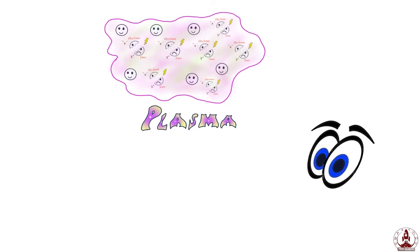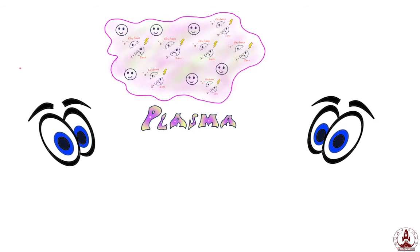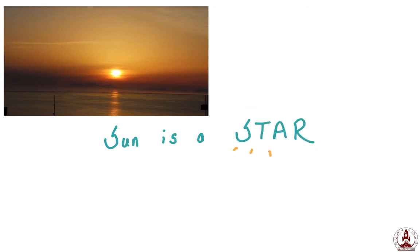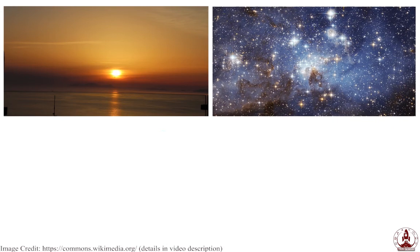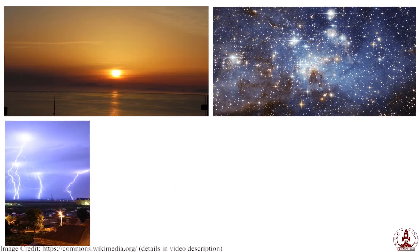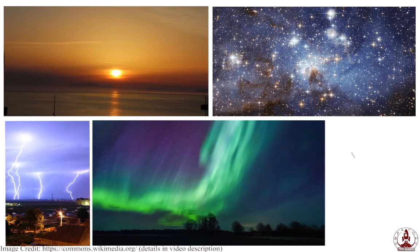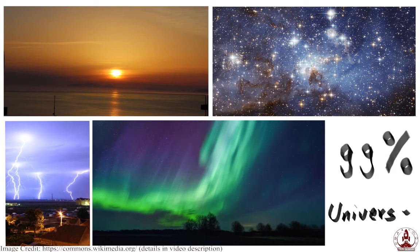Now we know what plasma is, but have we ever seen plasma in nature? The answer is yes. The beautiful sunset you enjoy — the Sun itself is a plasma. Since the Sun is a star, that means every other star is also plasma. What about natural plasma inside planet Earth? Lightning is a plasma, and the beautiful-looking Aurora is also a plasma. It is said that 99% of the universe is made of plasma.